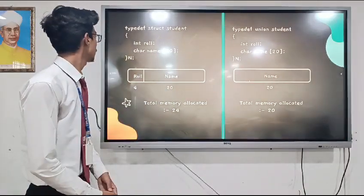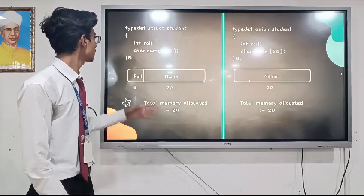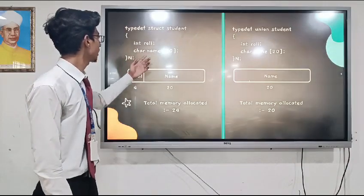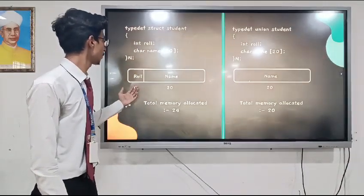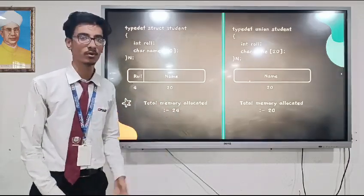As you can see in the structure, we declare an integer data type roll. The size of integer data type is 4, and we give character data type size 20. So as you can see, roll and name both are declared separately. So the total memory allocated is 24.